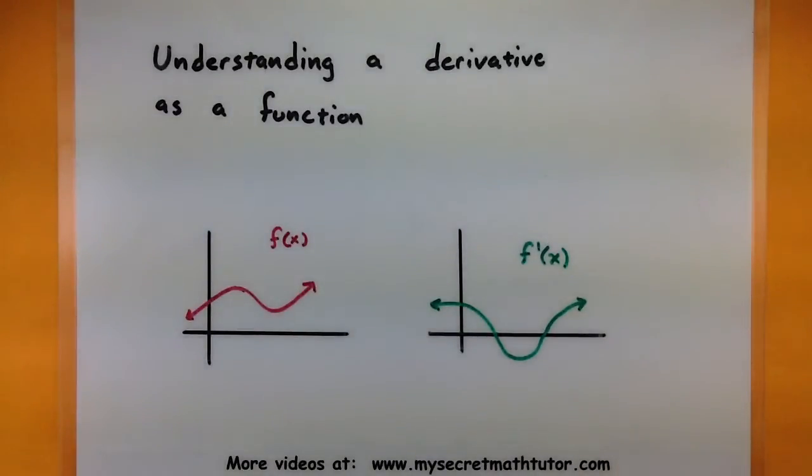So if you've been watching my videos, we've already done a lot of work on figuring out what it means to be a derivative at a single point. Maybe I want to figure out what the tangent line slope is at maybe a specific point here.